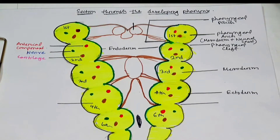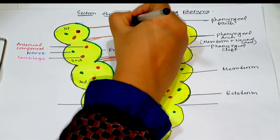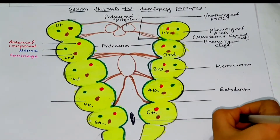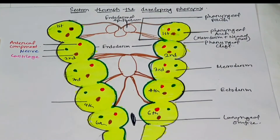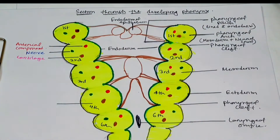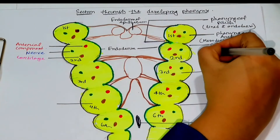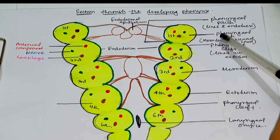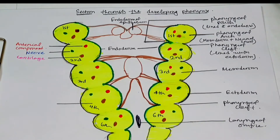Each pharyngeal arch is also characterized by its own muscular component. The muscular components of each arch have their own cranial nerve, and wherever the muscle cells migrate, they carry their nerve components with them. To summarize: the pharyngeal pouch is composed of endodermal lining, the pharyngeal cleft is lined by ectoderm, and pharyngeal arches consist of a mesenchymal core covered outside by ectoderm and inside by epithelium of endoderm.